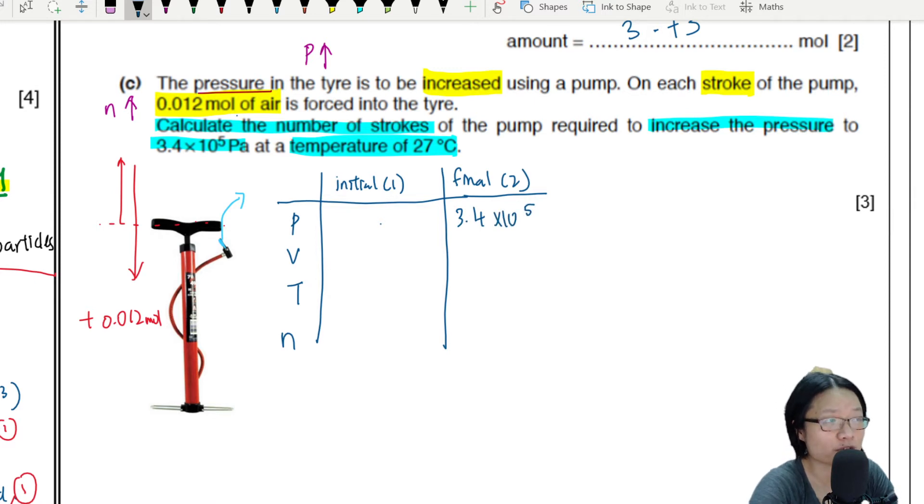So I have all the final conditions above this table. Final pressure is 3.4 times 10 to the power of 5. Final temperature is 27 degrees celsius. Final number of moles I want to find, so I'm just going to put the n2 here with the question mark, which I want to find this.